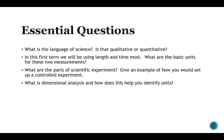Here are our essential questions. Number one, what is the language of science? And then it wants you to think about whether this language that we use in science is qualitative or quantitative or some combination of both. The first term is going to rely heavily on measurements of distance and time and what are the basic units for these two measurements and how do we use them?